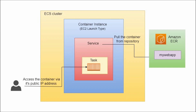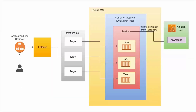To solve this problem, we have the Application Load Balancer. With the ALB, we are able to distribute traffic across a group of containers. It includes a listener, which listens to client requests coming in, and then redirects that traffic to target groups which are associated with our tasks.